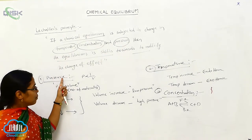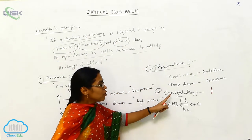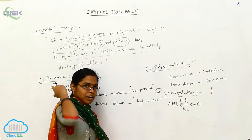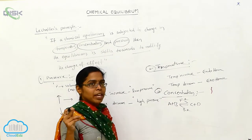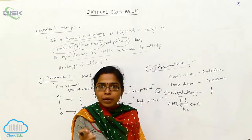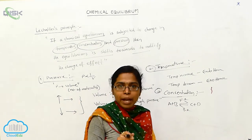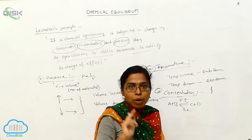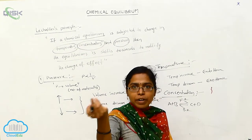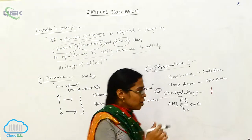The first effect is pressure, the second one is temperature, and the third one is concentration. Based upon the concentration, we have to say either the chemical equilibrium shifted towards the forward side or the chemical equilibrium shifted towards the backward side.